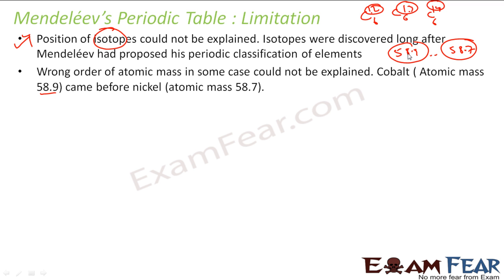It was only point two difference, but generally it should be first will come, then second and third like this, right? It should not be the other way. So the wrong atomic mass order was not explained at that time.